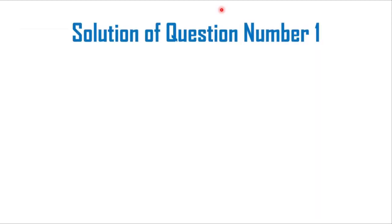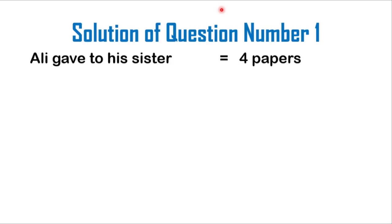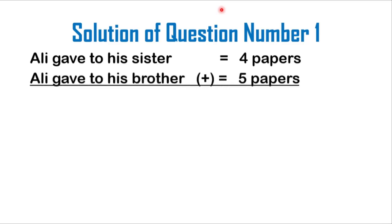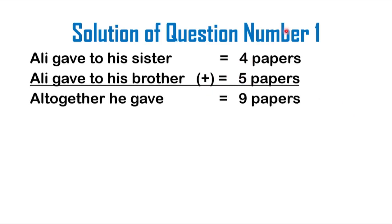Students, this is the solution of question number 1. In the first line, you should write that Ali gave to his sister 4 papers and then he also gave to his brother 5 papers. So now you are trying to notice how many papers he is giving. That's why in this first part, you should apply the concept of addition. Do you know that 4 plus 5 is equal to what? You should write that altogether he gave 9 papers. You know that 5 plus 4 is equal to 9, and that's why we write 9 here.